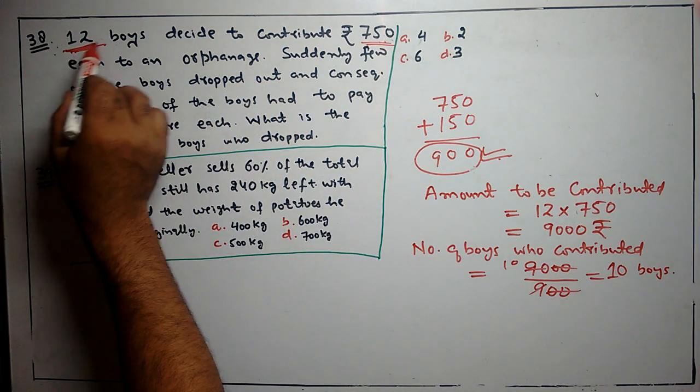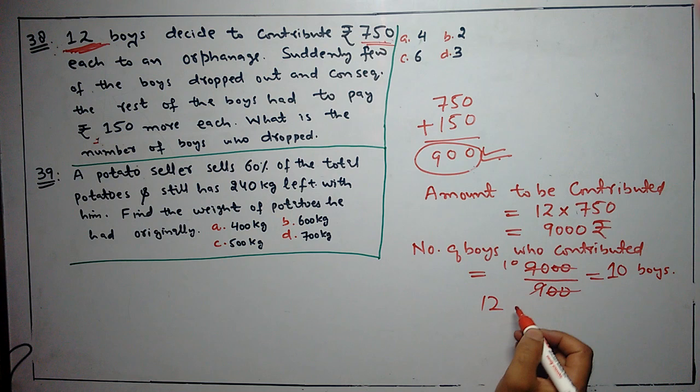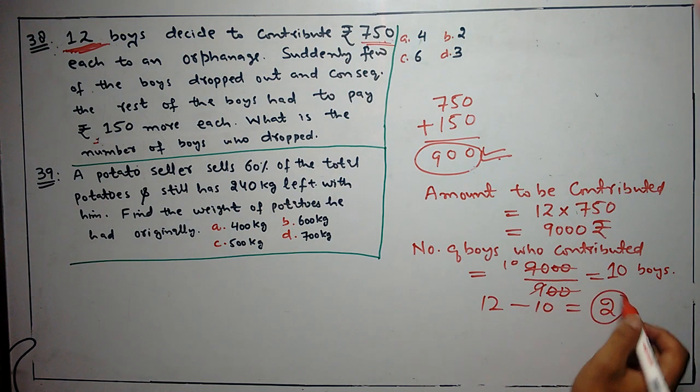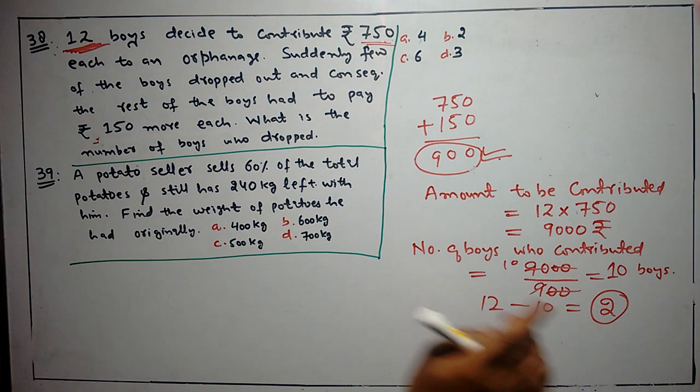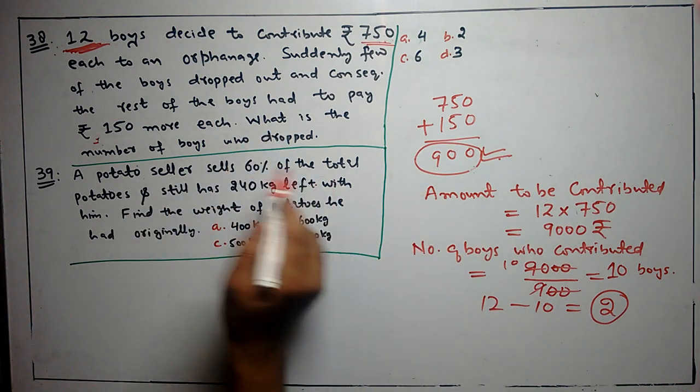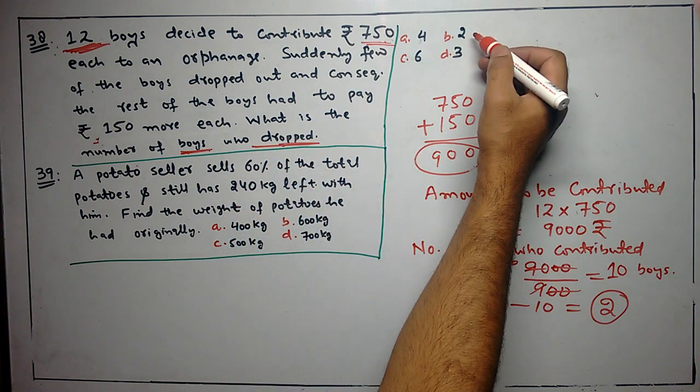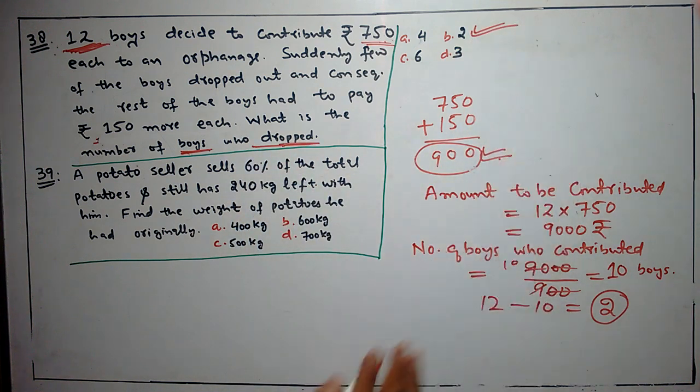Now total were 12 boys. 10 boys contributed, so 2 boys dropped out. How many boys dropped is the question. That means our answer is option B. Next question we go.